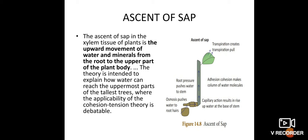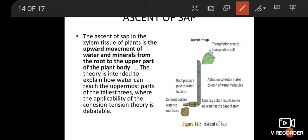Ascent of sap - an overview. The upward movement of water and minerals from roots to different plant parts is called ascent of sap. The upward movement of water and minerals from roots to the upper part of plant body is called ascent of sap. A number of factors play a role in ascent of sap, and it takes place in the following steps.